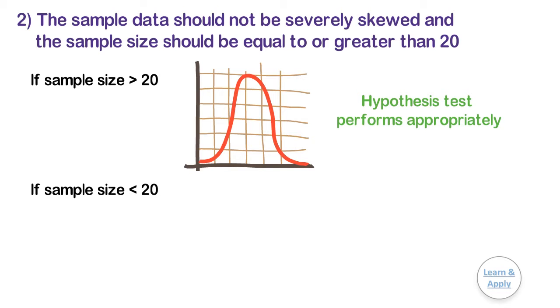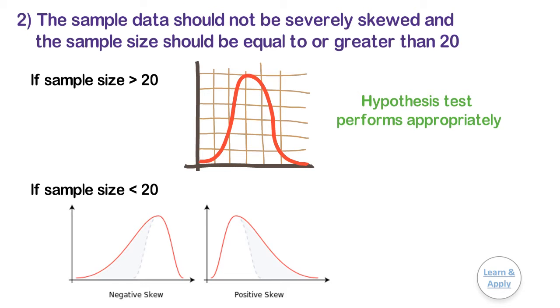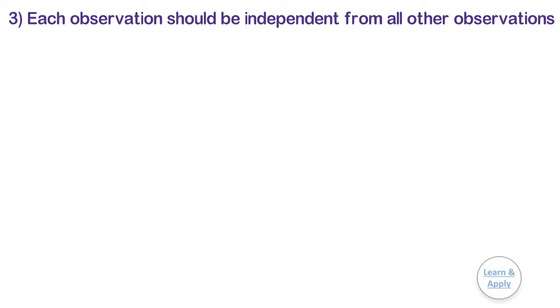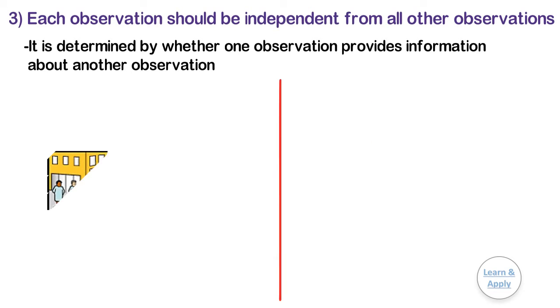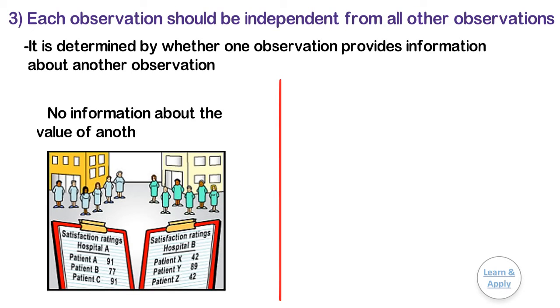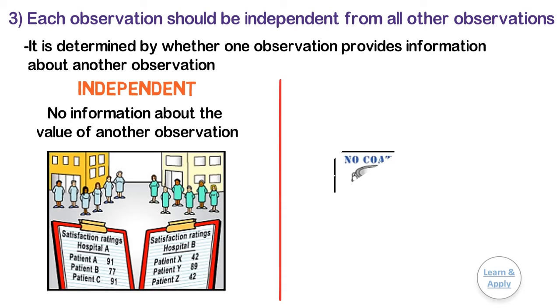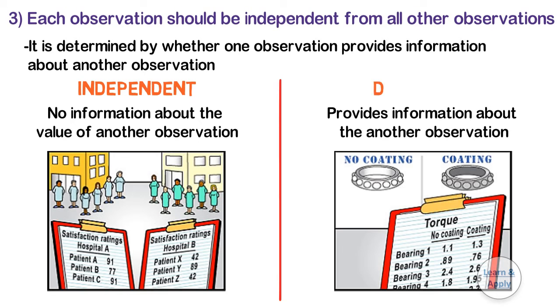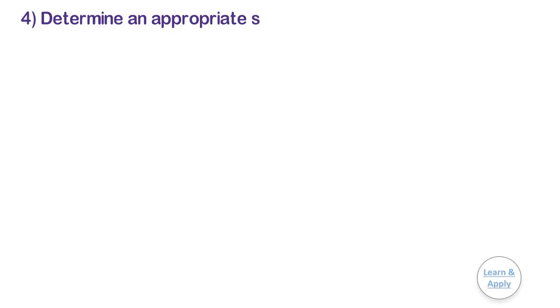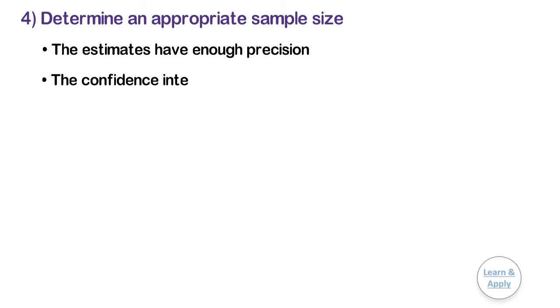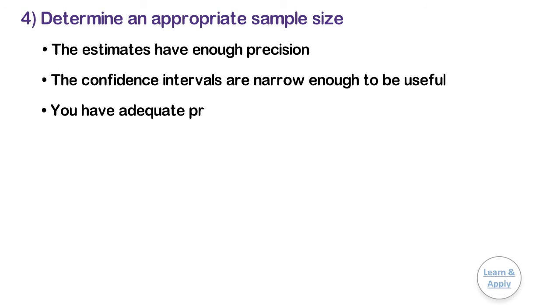If your sample size is less than 20, you should graph the data to check for skewness and unusual observations. If the data is severely skewed or has many unusual observations, use caution when interpreting results. Third, each observation should be independent from all other observations. Independence is determined by whether one observation provides information about another — if it provides no information, the observations are independent. If your observations are dependent, your results may not be valid. Fourth, determine an appropriate sample size — your sample should be large enough to ensure estimates have enough precision, confidence intervals are narrow enough to be useful, and you have adequate protection against type 1 and type 2 errors.